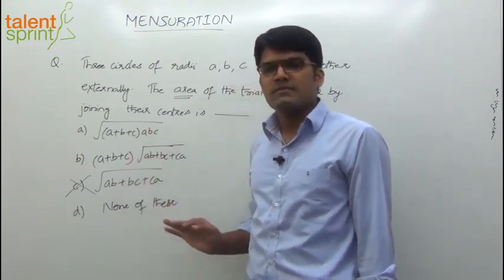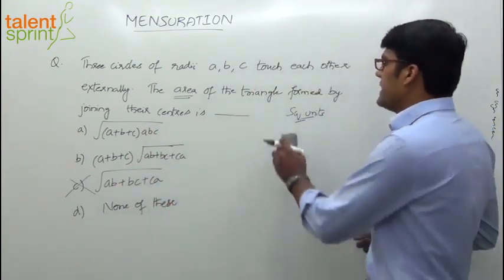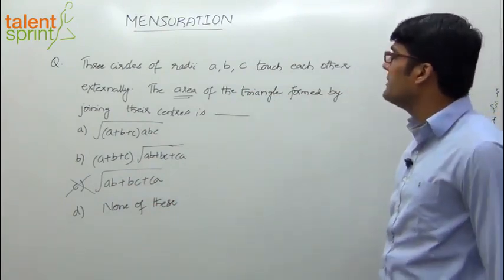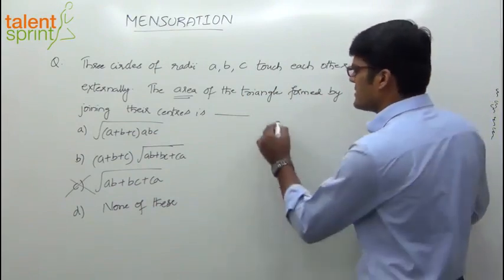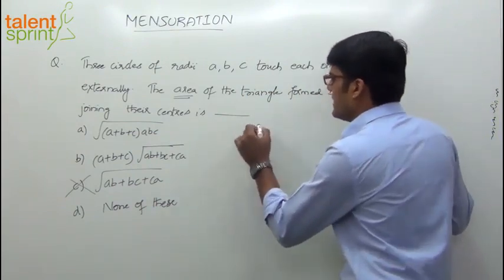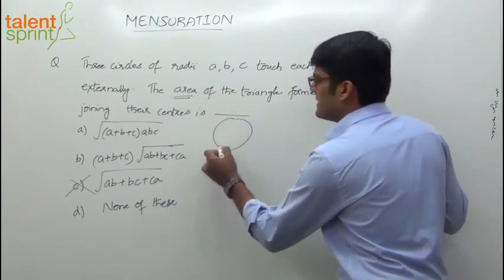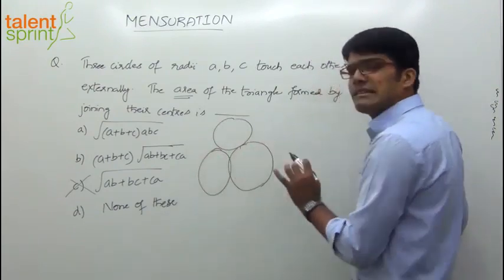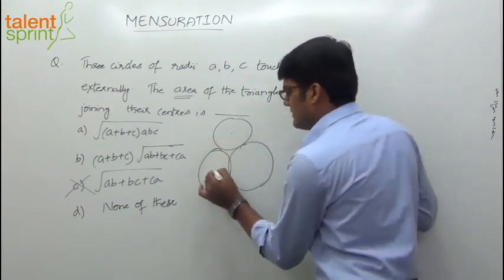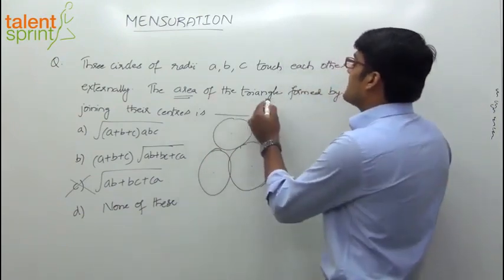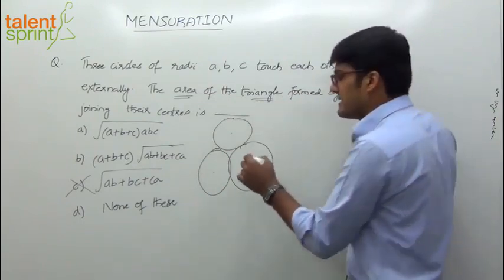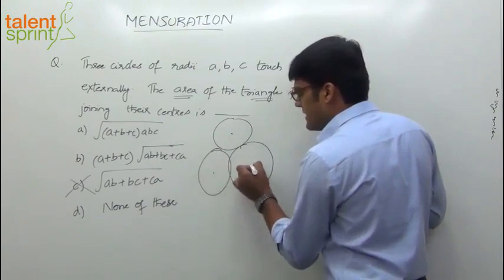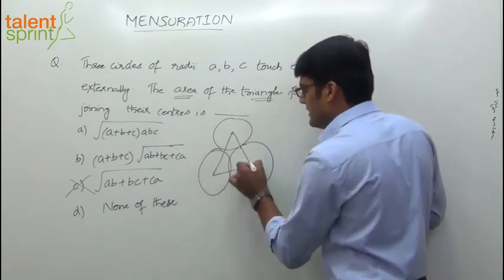Option C is not in square units, so it's eliminated. Now let's look at the detailed solution. The problem says there are three circles of radii A, B, and C which touch each other externally. We need to find the area of the triangle formed by joining the three centers. Let's visualize those three circles touching externally, with centers marked.